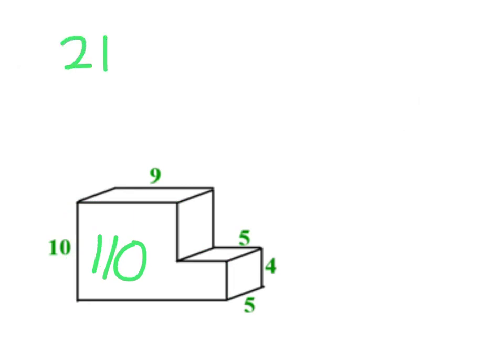Now I'm going to go ahead and put my formula down. Of course, 2B plus ph. Well, I have my big area of my base now, which is 110. I just need to find the perimeter of that.